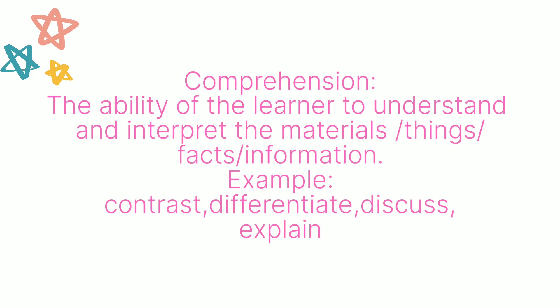The next level is comprehension: the ability of a learner to understand and interpret materials, things, or facts. In the first level, knowledge, the student can recall without knowing the meaning. But in comprehension, we talk about the ability to understand and interpret meanings, materials, things, facts, or information. For example: contrast, differentiate, discuss, explain. Sample questions: differentiate between the animal cell and the plant cell; discuss the Roman history.